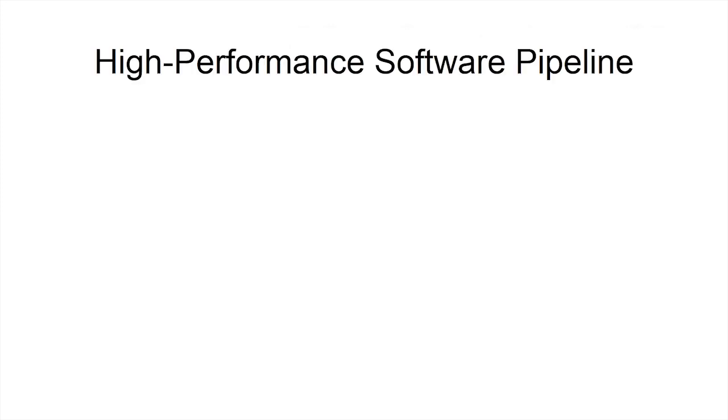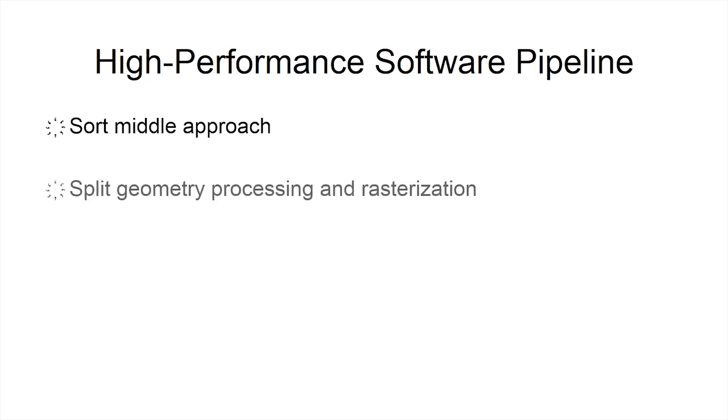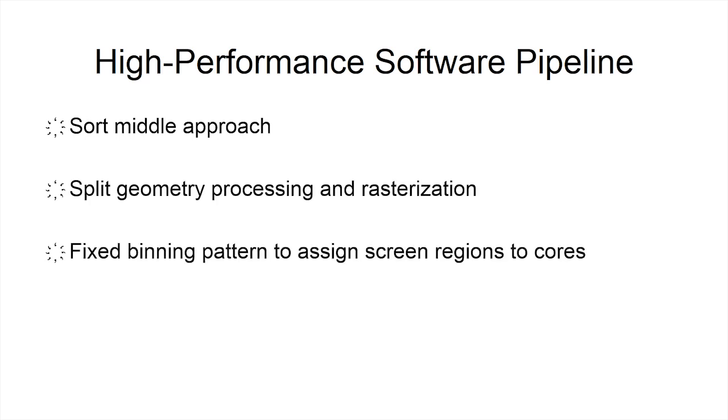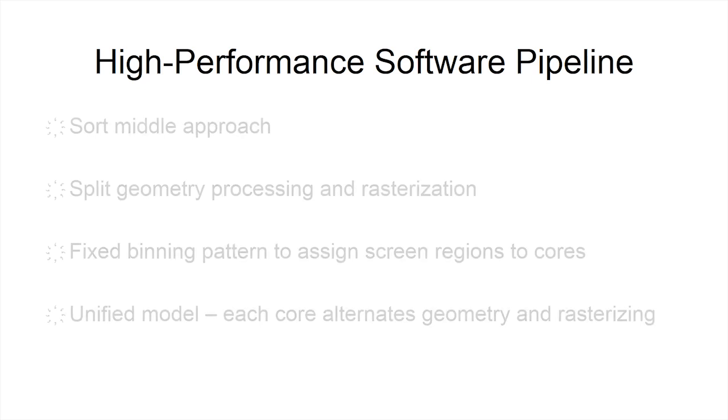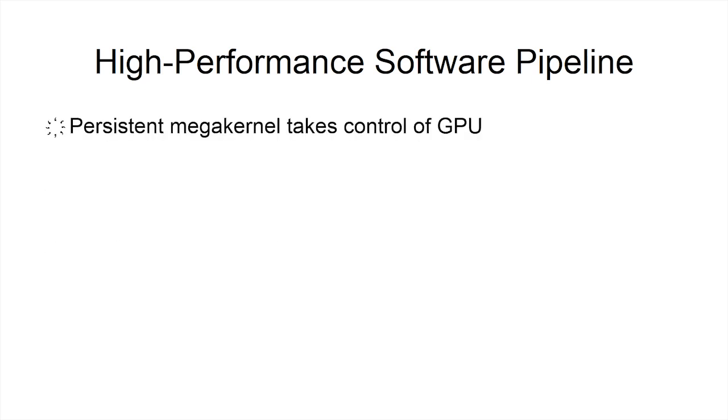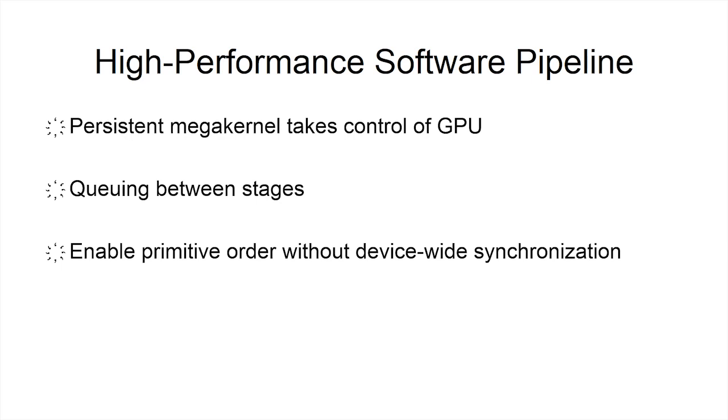We present a high-performance software graphics pipeline architecture based on a sort-middle approach, splitting geometry processing and rasterization into separate stages. A persistent mega-kernel takes control of the GPU and ensures load balancing and effective scheduling. We provide a prototype implementation of our approach named CURE.